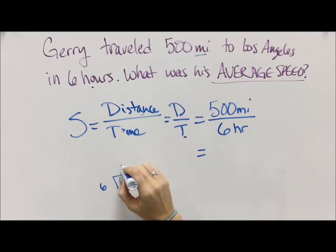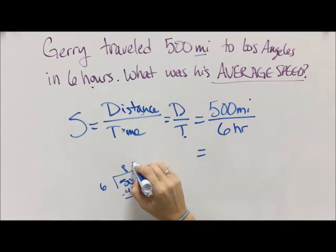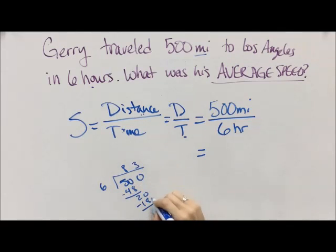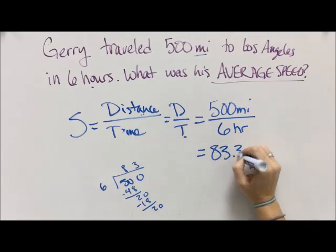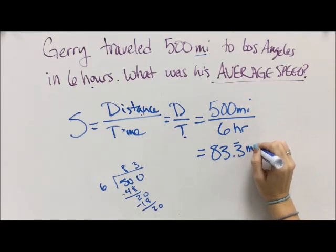So we have 500 divided by six, and six times 48, and then you get to 20, and then six times three is 18. We wind up with 83.3 repeating miles per hour.